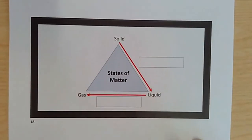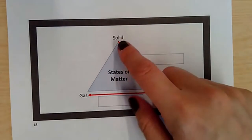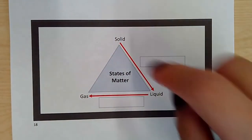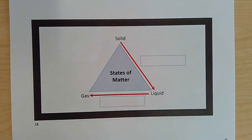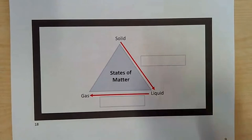The final task is to complete this. Now you don't have to draw a triangle. You can just write solid and then an arrow to liquid. What causes a solid to turn into a liquid? Can you write that process down?